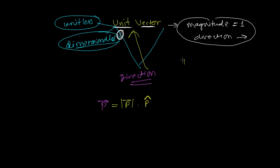A unit vector is represented using a cap symbol. For any vector p, its unit vector is written as p-cap (or p-hat). p-cap represents the unit vector of p in the direction of p — it is unitless, dimensionless, and has magnitude one.